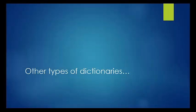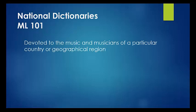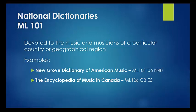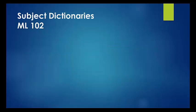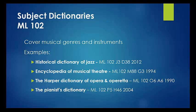While Grove is the largest and most comprehensive reference source for music, there are many more specialized dictionaries available in the library and online. Dictionaries devoted to the music and musicians of a single country are classed in ML 101. These are called national dictionaries. Some examples include the New Grove Dictionary of American Music and the Encyclopedia of Music in Canada, although there are many others on the shelf. Subject dictionaries cover a number of areas including musical genres and instruments. You'll find these titles classed in ML 102.